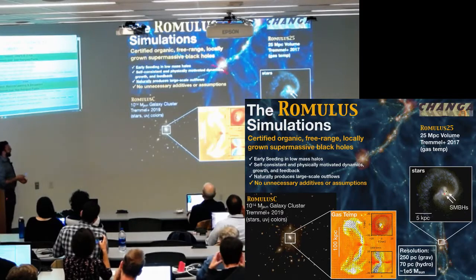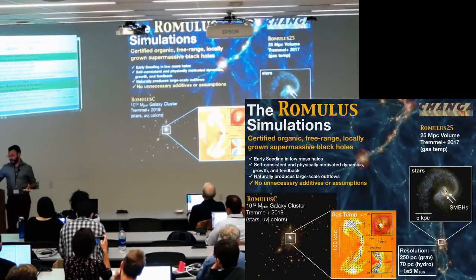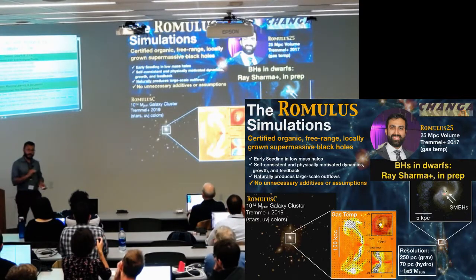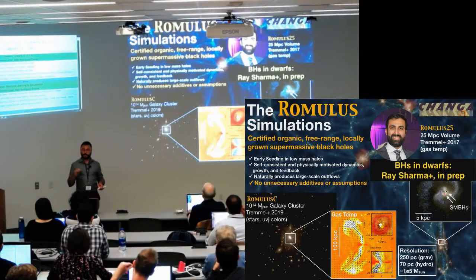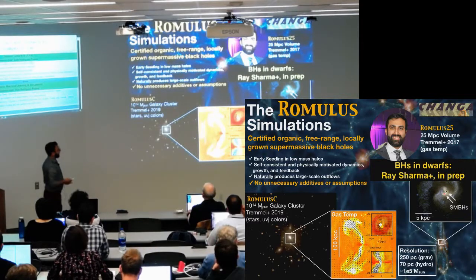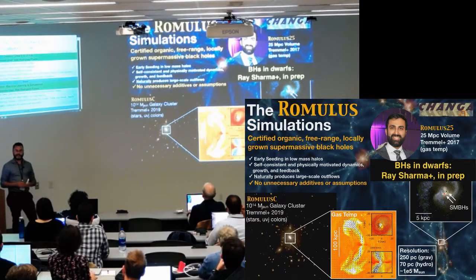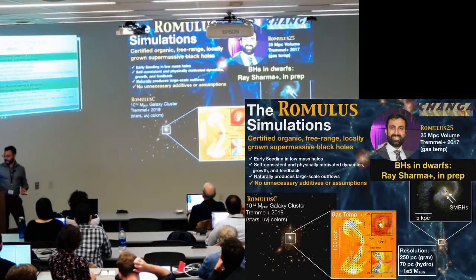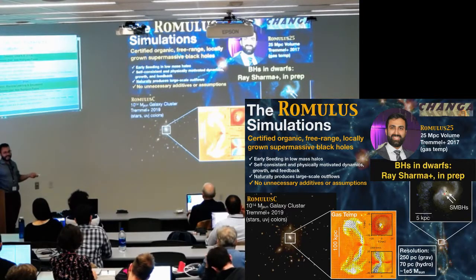I usually talk about black holes when I talk about Romulus, but I'm not going to talk about black holes today — I'm going to talk about dwarf galaxies. One special thing about Romulus is it does model black holes in dwarf galaxies, and Ray Sharma is doing work on studying those effects. But I'm going to be focusing on dwarf galaxy stars in the cluster context.